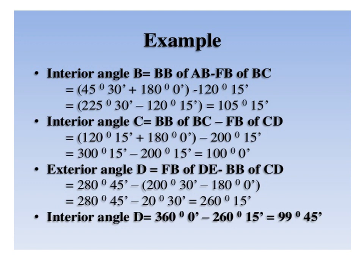You add 180 degrees to get the back bearing of BC, and from that you subtract the fore bearing of CD. Therefore the interior angle C equals 100 degrees 0 minutes. Then the exterior angle D equals the fore bearing of DE minus the back bearing of CD. The fore bearing of DE is 280 degrees 41 minutes. Since the fore bearing of CD is known, you subtract 180 degrees to get the back bearing of CD, giving an exterior angle of 60 degrees 50 minutes. To get the interior angle D, subtract the exterior angle from 360 degrees, giving 99 degrees 41 minutes.